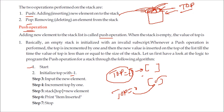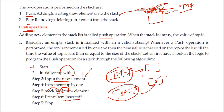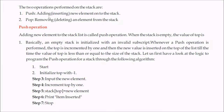You start with top equal to minus 1. You input the new element — ask the user for the number to place on the stack. Then you increment top by 1, and place that element at the top index of the stack. This is how items are inserted in the stack through the push operation.